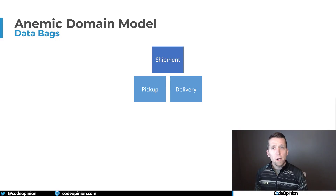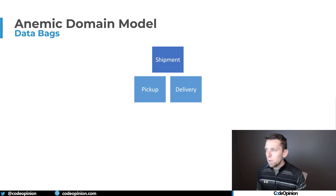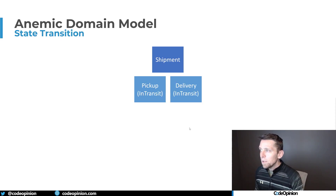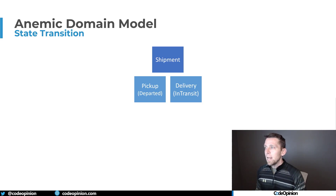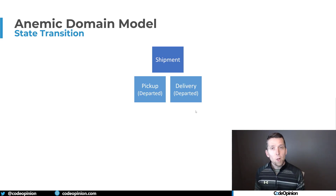The example I'm using through this video is related to food delivery — we have a shipment. A shipment consists of picking up food at a restaurant and delivering it to your house or apartment. The key thing is that a shipment goes through some status and state changes: from in transit to arrived, meaning the driver arrived at the restaurant, then departed, heading to the delivery destination — in transit, arrive, departed.